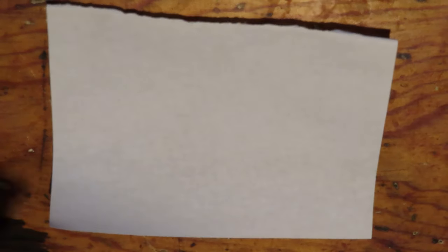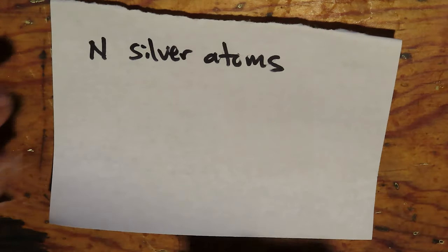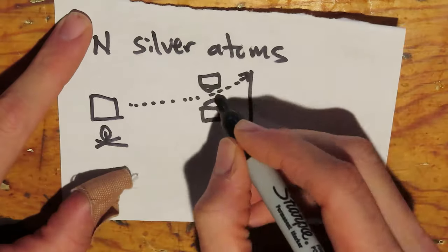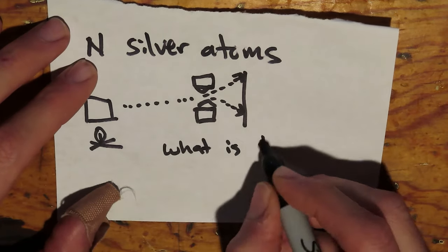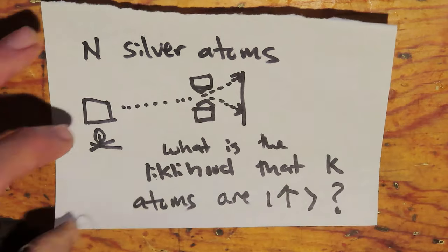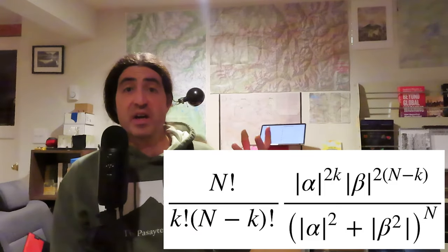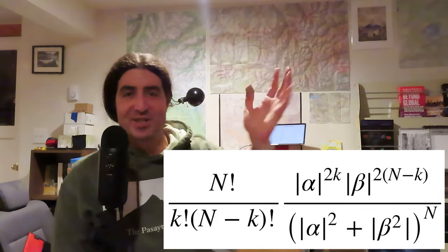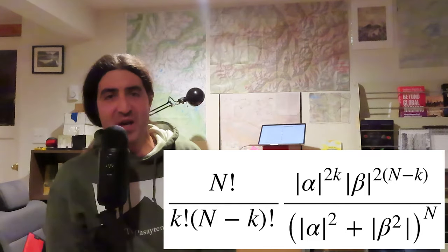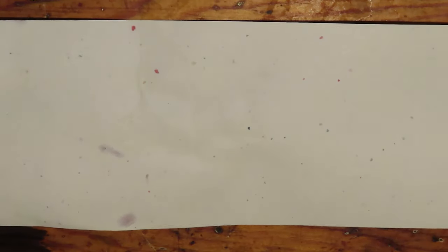As an exercise, let's consider stacking multiple observations of atoms. If you have n silver atoms, what's the probability of observing k of those n atoms in the spin-up state? I leave it to you to prove that this is given by the binomial distribution, so that in terms of α and β, we have n choose k times this relational mess between the absolute values of α and β. Note that when you set α equal to β, we get back the standard binomial distribution that you would get when studying coin flips.